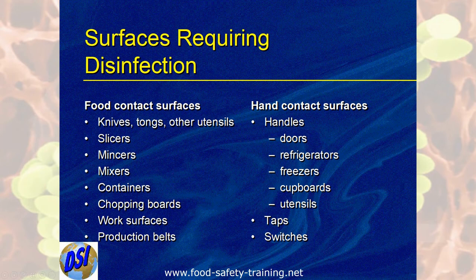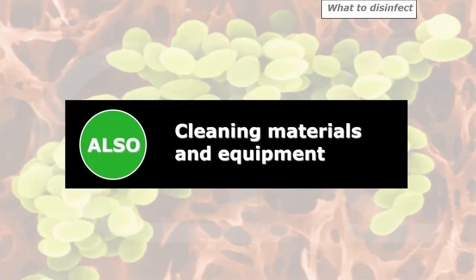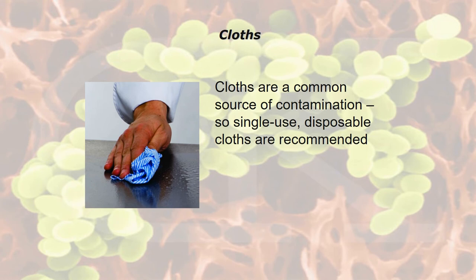What has the potential to come into contact with our hands? Hands are the biggest source of cross-contamination in a kitchen. We've got handles of doors, fridges, freezers, cupboards, utensils, taps, and switches. Something else that needs to be disinfected is the cleaning materials and equipment — your mops and buckets. Cloths are a common source of contamination, so single-use disposable cloths are recommended. The blue paper towel roll is much preferred because it works out a lot cheaper and is single use — throw it away.